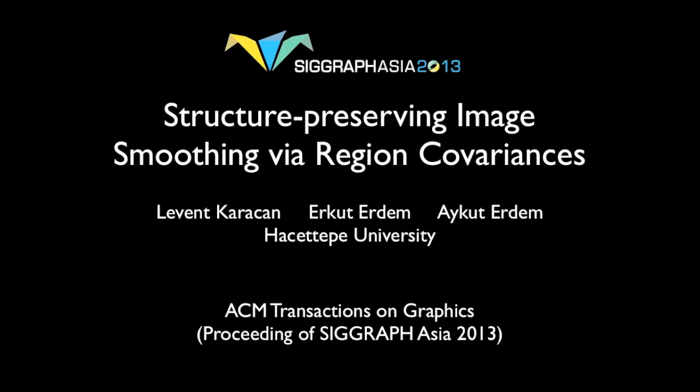We present a novel structure-preserving image smoothing method, which depends on covariance matrices of simple image features, also known as the region covariances.